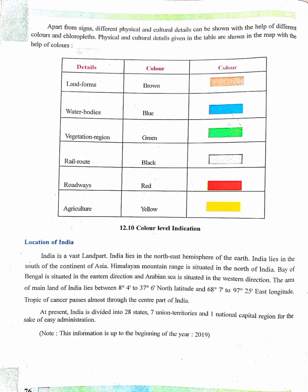Apart from science, different physical and cultural details can be shown with the help of different colors and choropleth maps. Physical and cultural details given in the table are shown in the map with the help of colors.